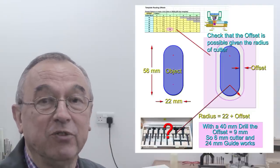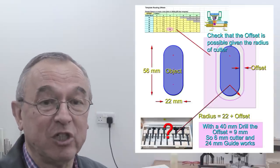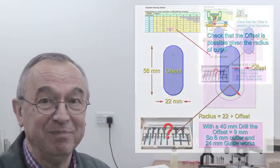With that, I need an offset of 9mm, and from the table, I've chosen a 6mm cutter and a 24mm guide.